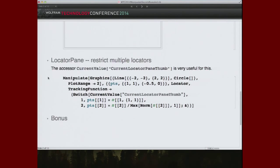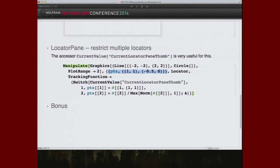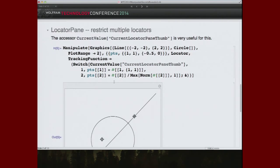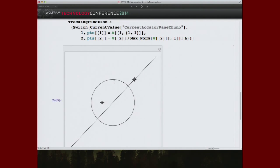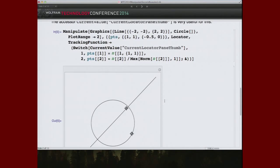And if you have a multi-locator in Manipulate, so here we start with a pair of points. You can restrain them each in different ways via the very convenient current value that lets you know which of the locator thumbs you're dragging. So here we have a pair of locators. One of them happens to sit on a line. One of them happens to be inside of a circle. And they each have separate restriction functions, separate tracking functions. So the first one I can't drag off of that line. And the second one I can't drag out of that circle.